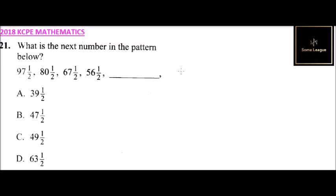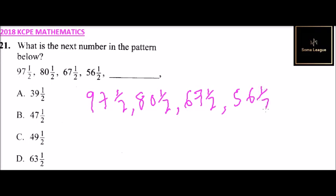Question number 21: What is the next number in the pattern below? We have 97 and a half, 80 and a half, 67 and a half, and 56 and a half. We are required to find the next number.